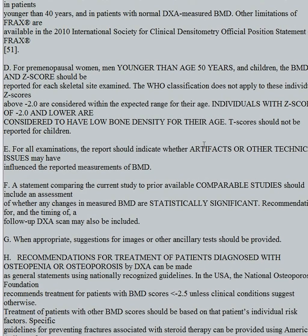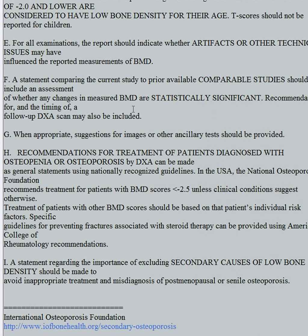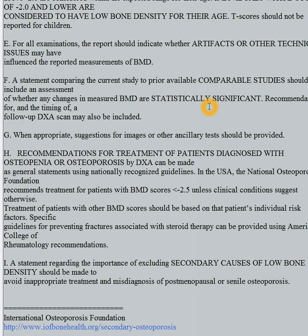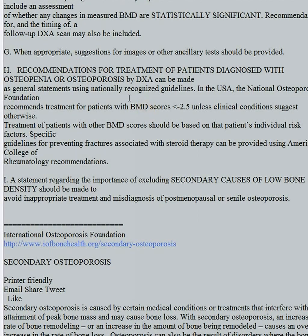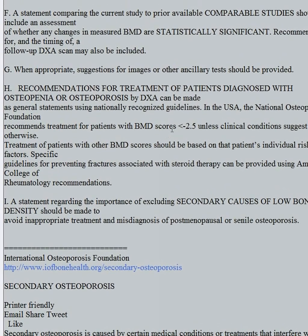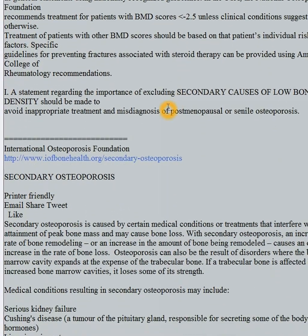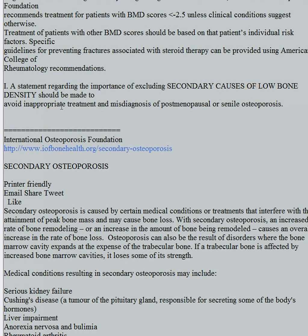All reports should mention artifacts or other technical issues. Regarding comparisons, you have to give the values and state whether the change is statistically significant — the ACR says to state whether it's statistically significant, and we'll discuss how to determine that. Reports for abnormal patients should recommend treatment for those diagnosed with osteopenia or osteoporosis — we made a general statement like 'consider treatment' in the pull-down list for impressions. A statement should also be made regarding excluding secondary causes of low bone density.